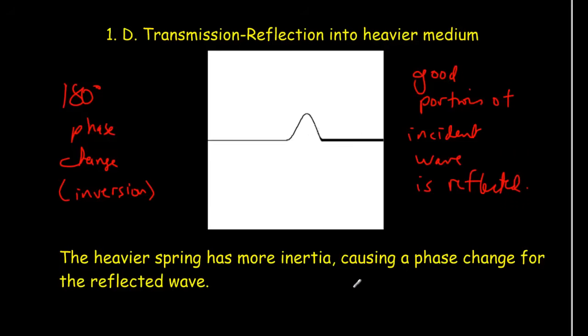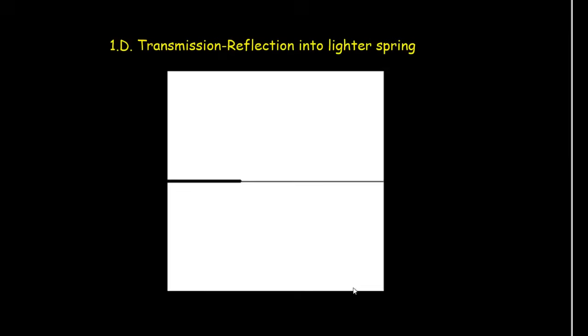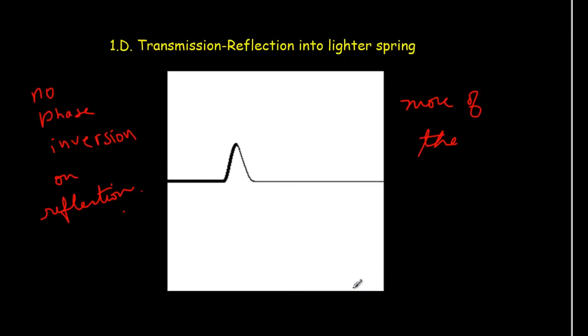And we can understand that the second spring here, it's heavier, it's got more inertia, so it doesn't move so much. And it's the lighter spring that does more of the moving, and that makes it do the phase change. If we go in the opposite direction, we send the pulse from a heavy spring to a light spring, then we get, on reflection, no phase inversion. And we also get not so much reflection this time. Not so much of the wave gets reflected. A lot of the wave gets transmitted. So I'd say more of the wave is transmitted.